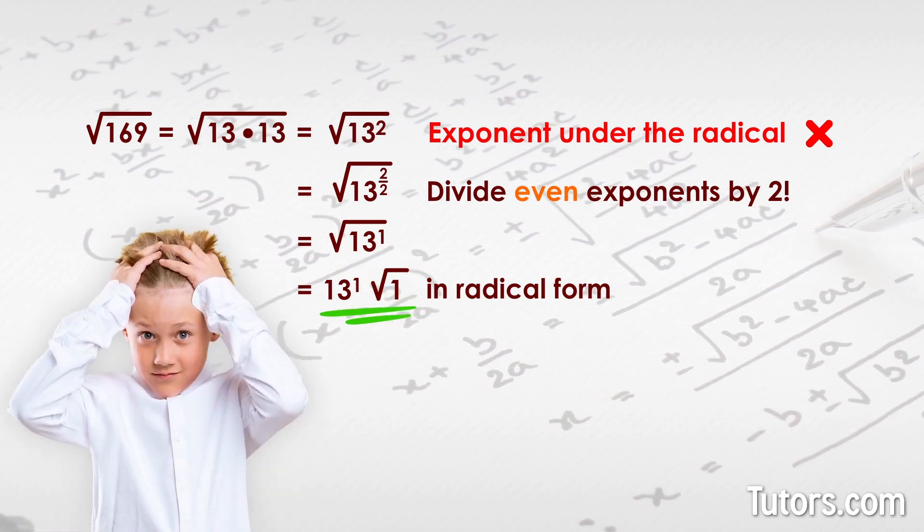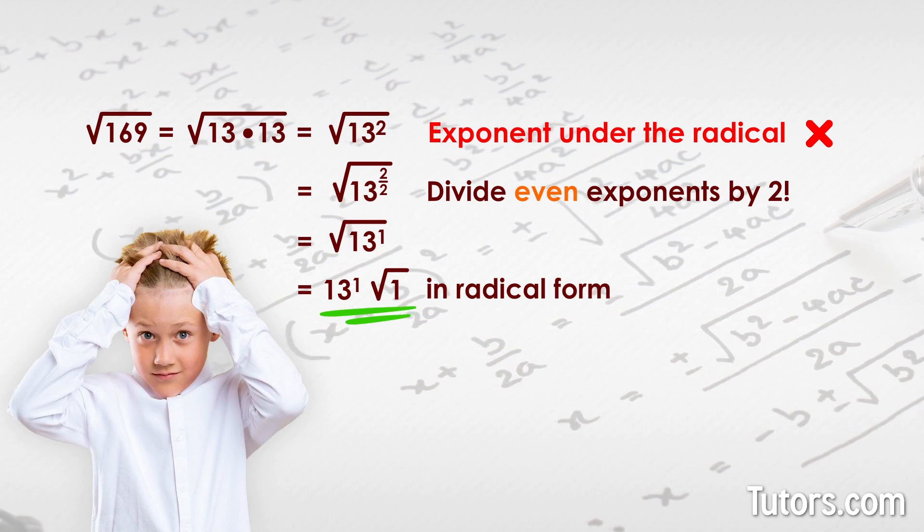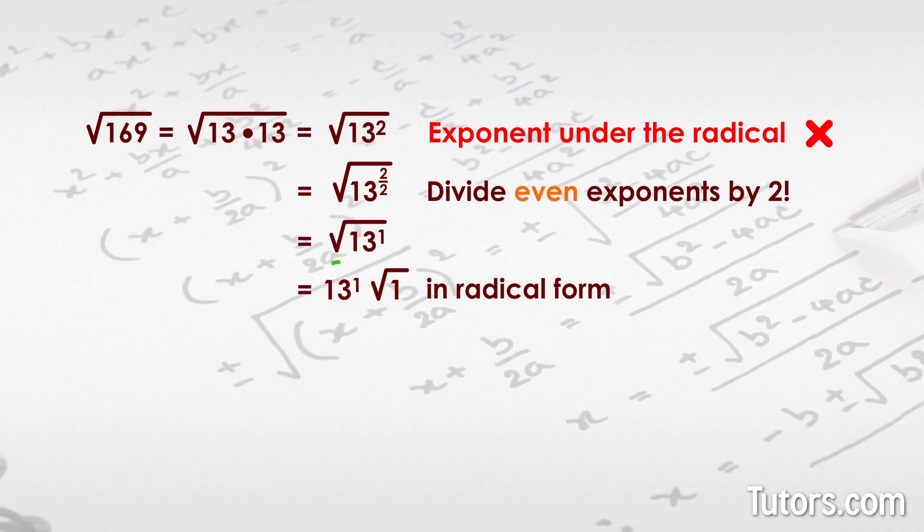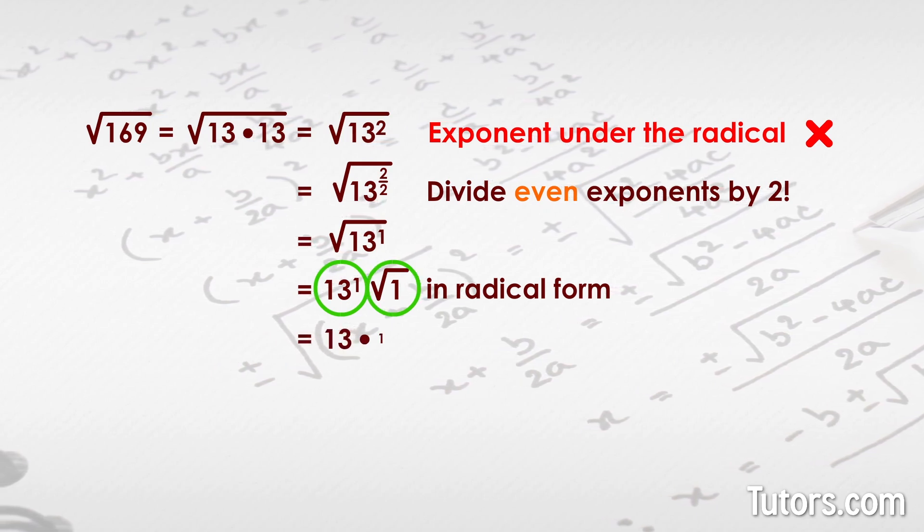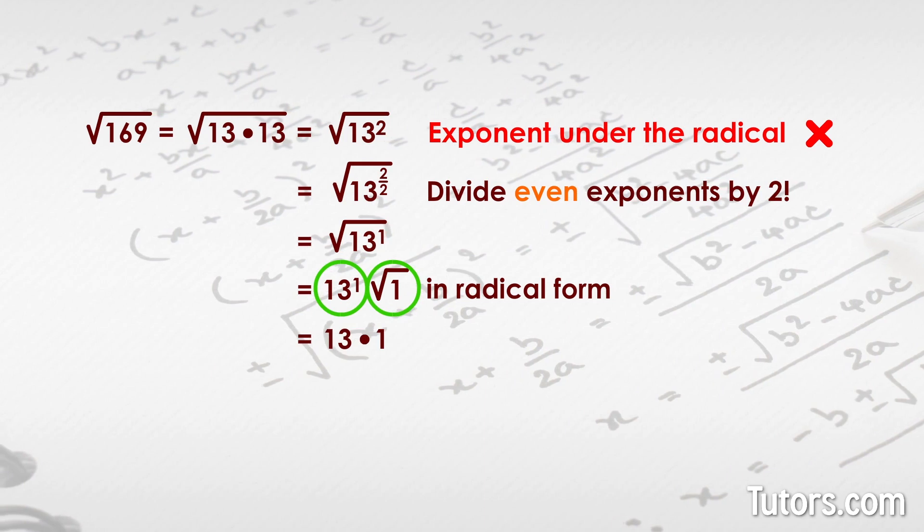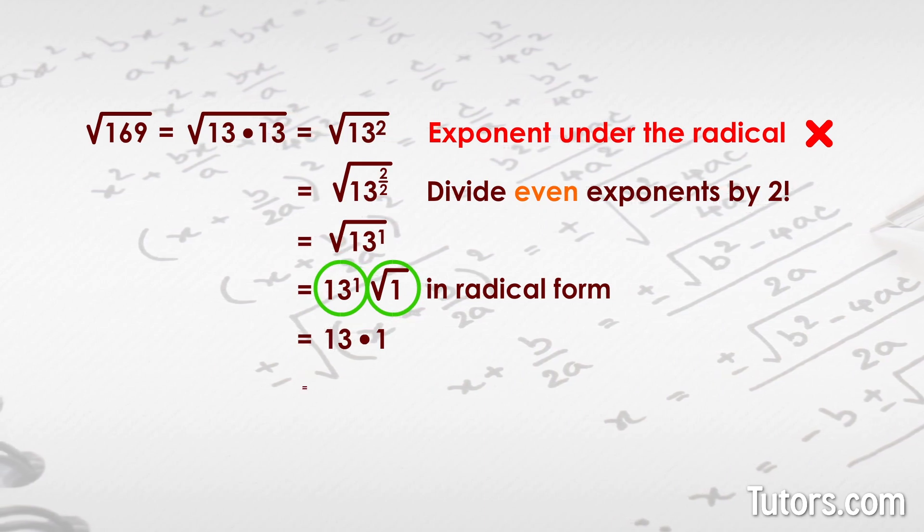The new result looks complicated, but if you simplify the parts, you find it is not. 13 to the first equals 13, and the square root of 1 equals 1. This yields 13 times 1, which is 13.